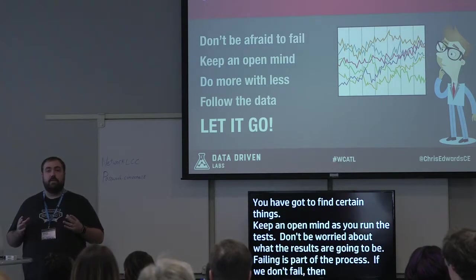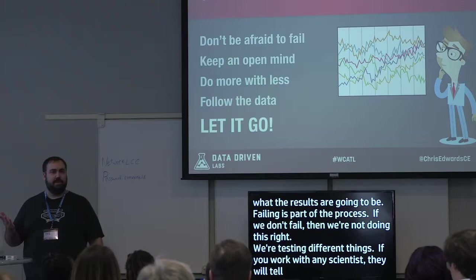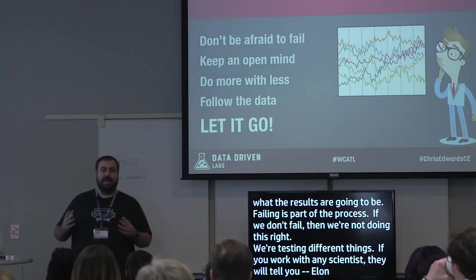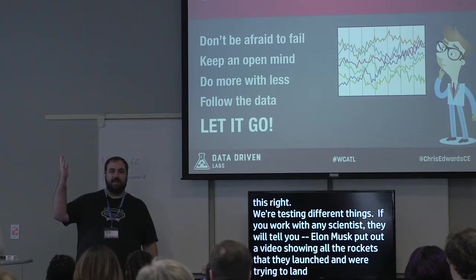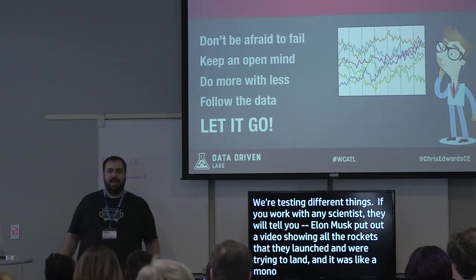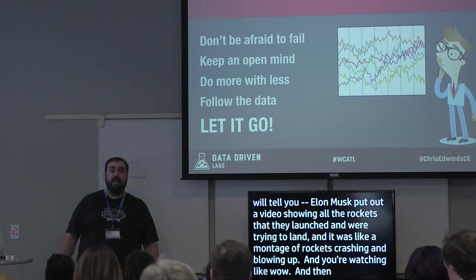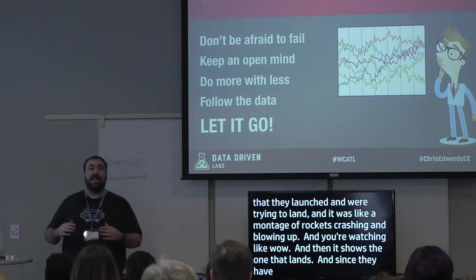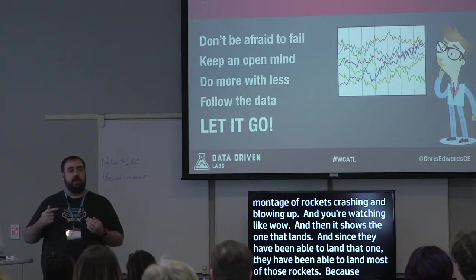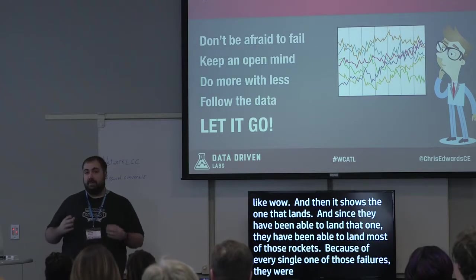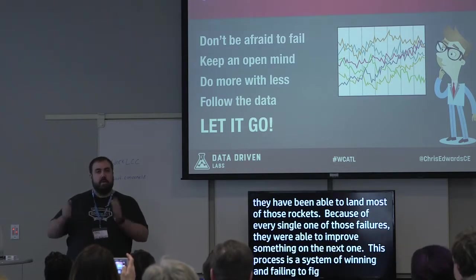Elon Musk put out a video from SpaceX showing all the rockets they launched and tried to land — it was three minutes of rockets crashing and blowing up. Then it shows the one that lands, and since then they've been able to land most of them. Because of every single failure, they learned something to improve the next one. That's what this whole process is: a system of winning and failing to figure out what we want to do and what we don't want to do again.